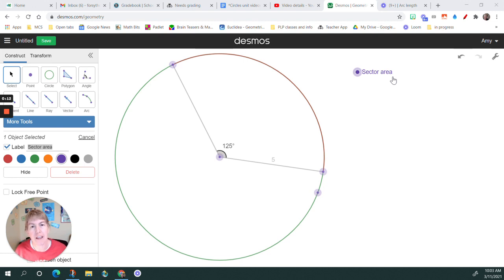A sector is a part of a circle that is created when you have this central angle. Think piece of pizza. Now this is a large piece of pizza. Maybe you're hungry. That is your sector area that you can find.